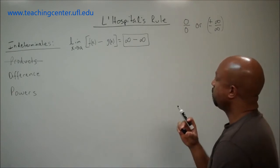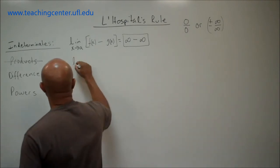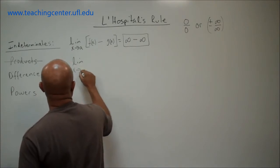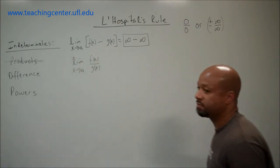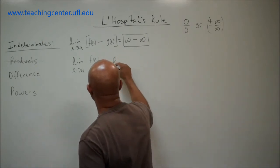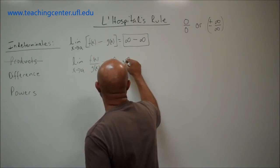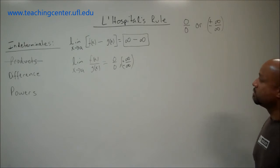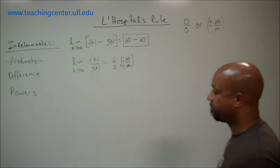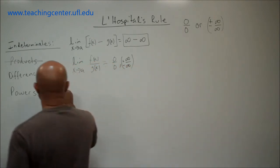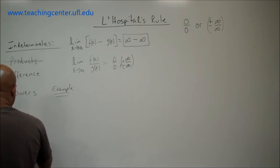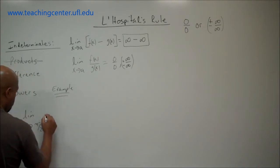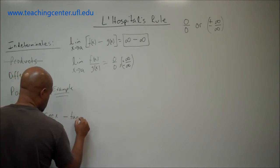We basically want to rewrite the function so that we get the limit as x approaches a of f(x) divided by g(x), so that we get either 0 over 0 or infinity over infinity. Let's do an example: the limit as x approaches π/2 from the left of secant x minus tangent x.